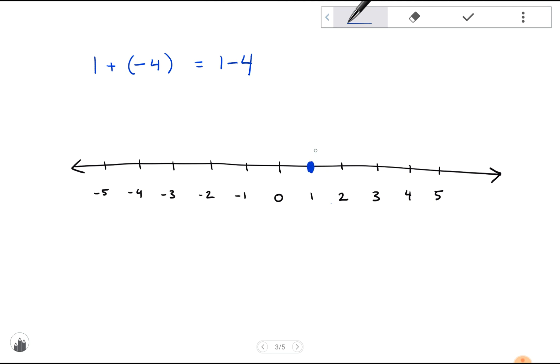We move to the left four units and we end up with negative three. So one plus negative four is one minus four, and that is negative three.